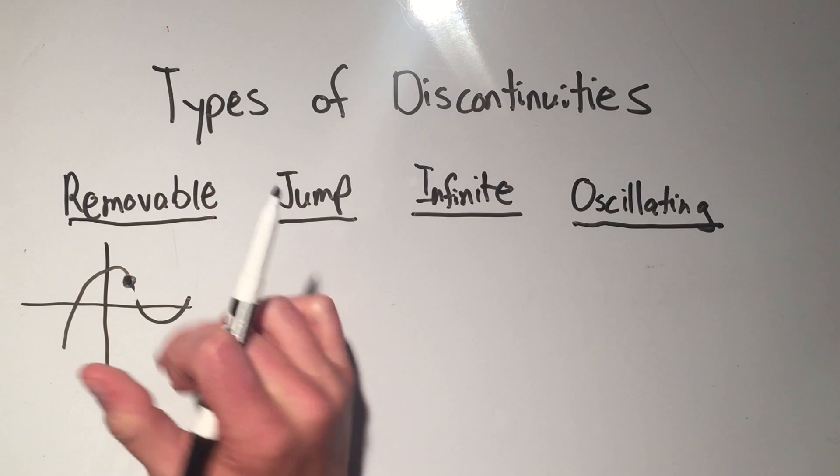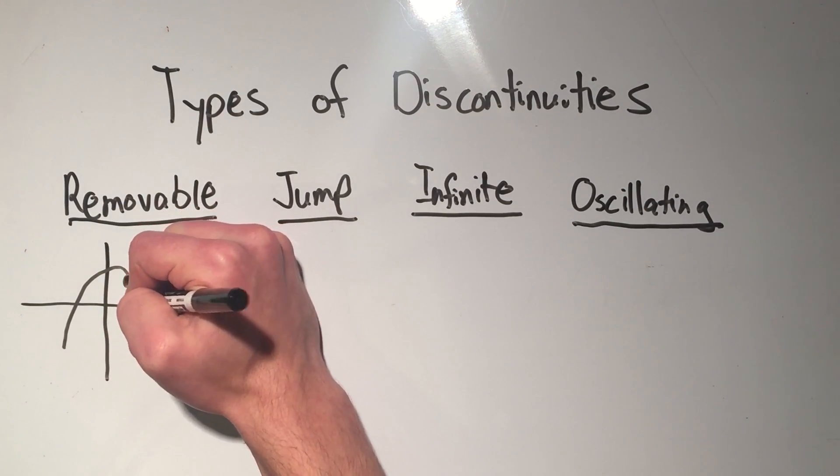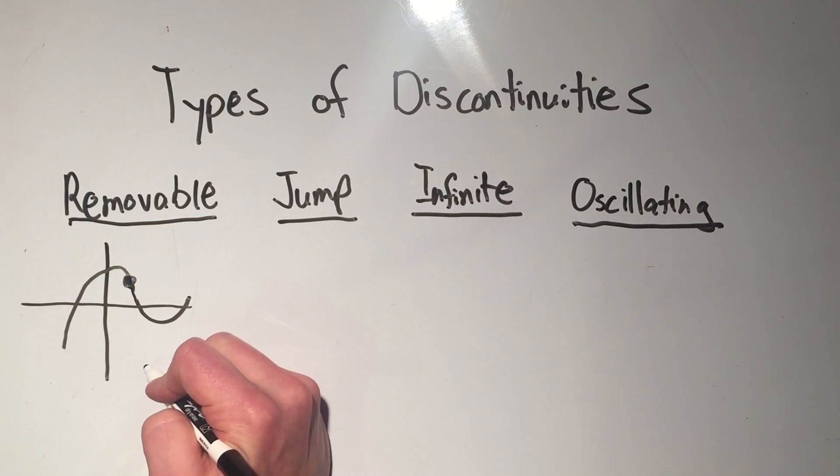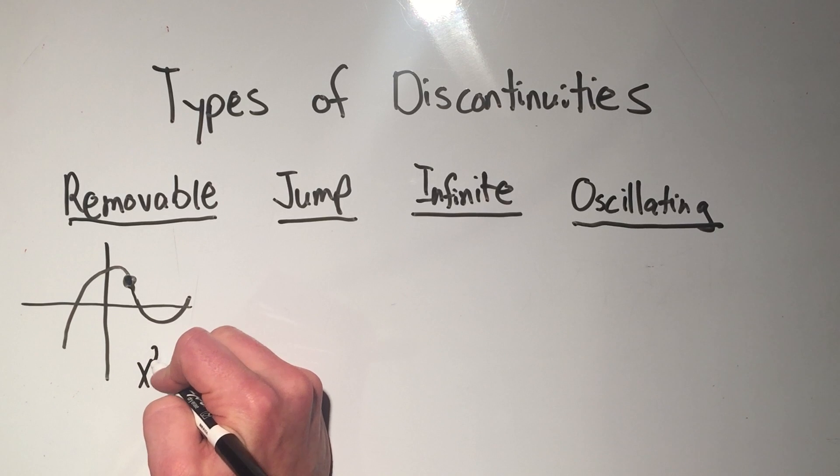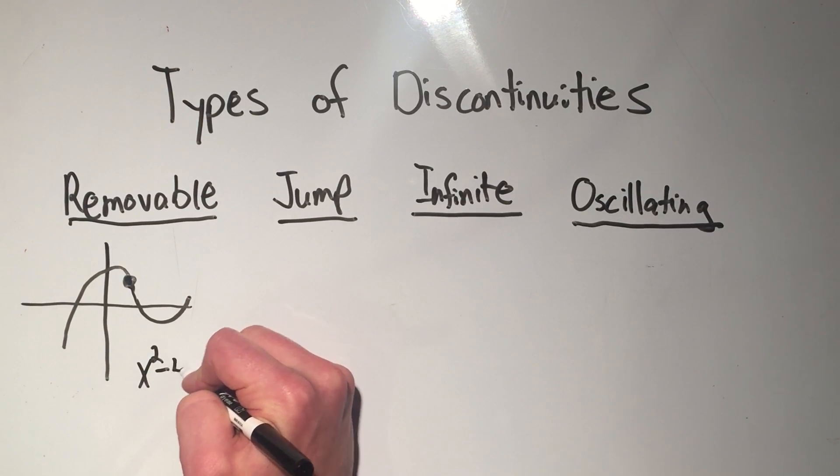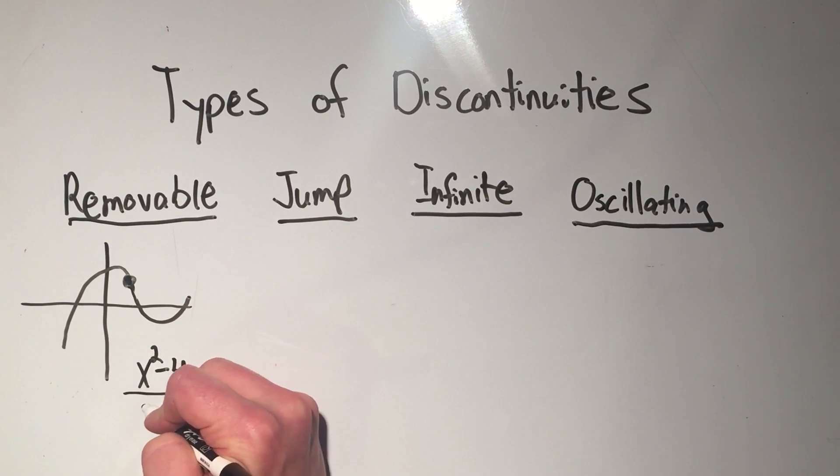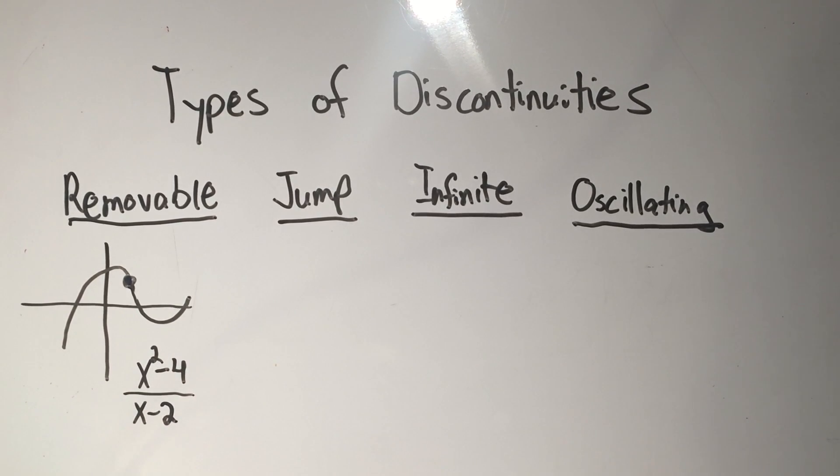Algebraically, those look like things that you could factor. So if you had, let's say, I'm just making this up really quick, x squared minus 4 over x minus 2. You can already see that this would be discontinuous at 2 because if you plug in 2, you would get 0 over 0.